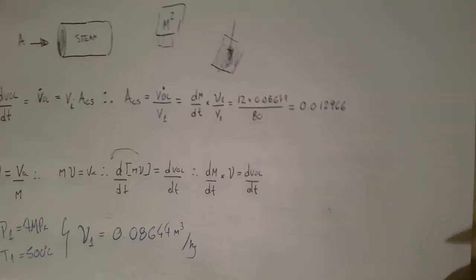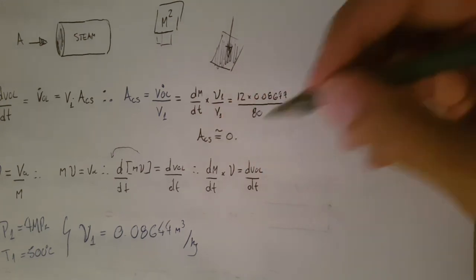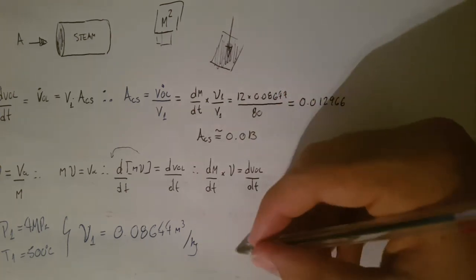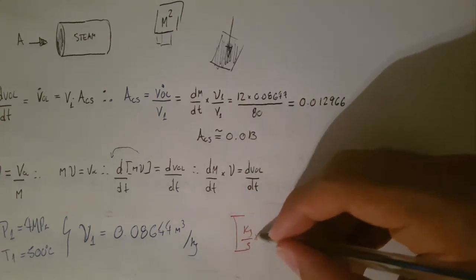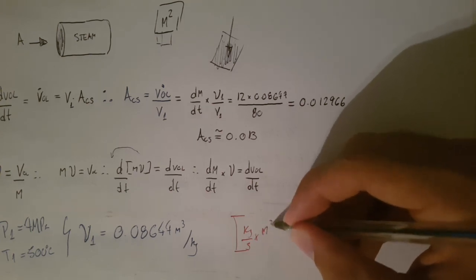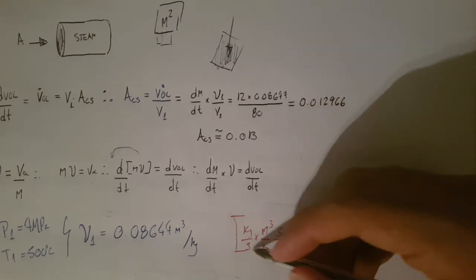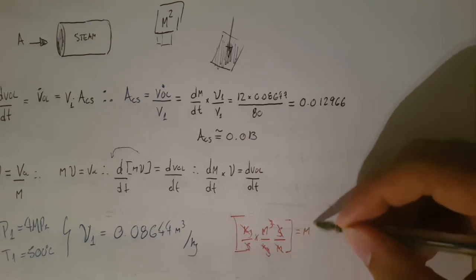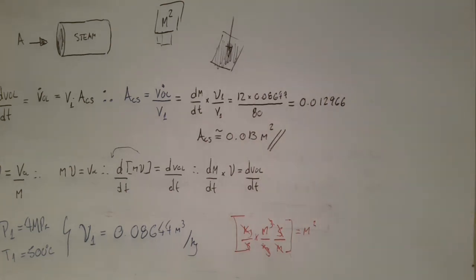That's going to be 0.012966, which is approximately 0.013. And then, let's have a look at the units quickly. Let's make sure we know what we're doing. It's kilograms per second. Specific volume, meter cubed per kilogram. And then, the bottom, meters per second. Second cancels second. Kilogram cancels kilogram. Meter cubed with a meter. Left with meter squared. Okay. So, this is, you can confidently say it's meter squared. And that's our third answer right there.